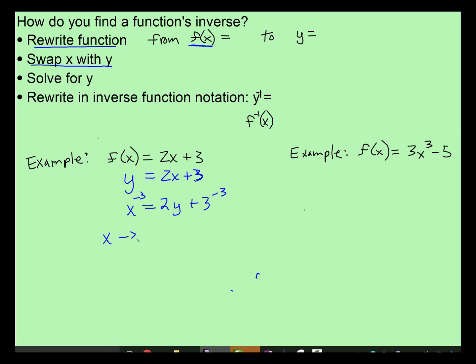So now we have x subtract 3 is equal to 2y. And the inverse of multiplying is dividing. And remember when you divide a side, you divide everything. So now we have y is equal to x subtract 3 over 2.